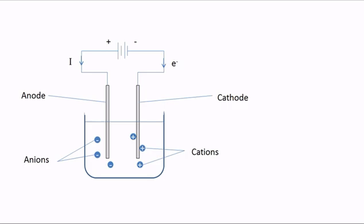In a simple electrolysis setup, we have a cell, two electrodes, and an electrolyte. Within the electrolyte we have positive and negative ions. The negative ions, or anions, will move towards the anode, and the positive ions, or cations, will move towards the cathode. This is a simple diagram to show electrolysis and the movement of ions in the electrolyte.